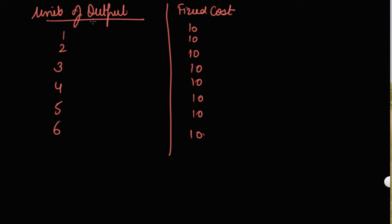This is the table showing the units of output you have produced and this is the total cost. Let us plot this on a graph. On the x-axis you will take the output. On the y-axis you will take the cost.